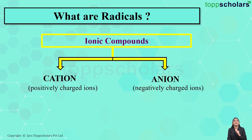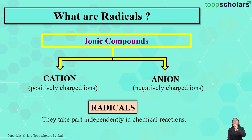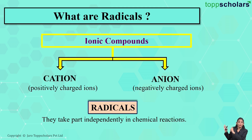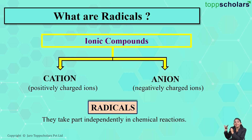These cations and anions are called radicals, and these radicals take part independently in a chemical reaction. So ionic compounds are made up of two constituents — cation and anion — where the cation is positively charged and the anion is negatively charged. These cations and anions are nothing but radicals, and they independently take part in the chemical reaction.